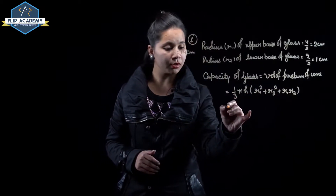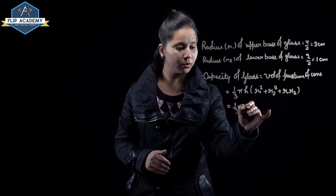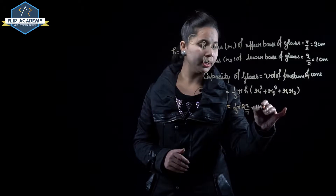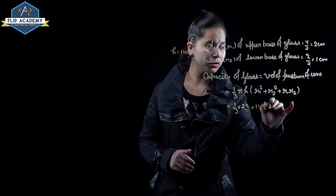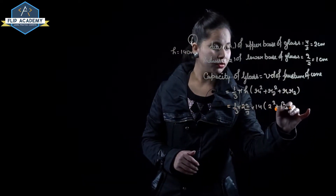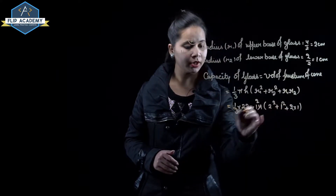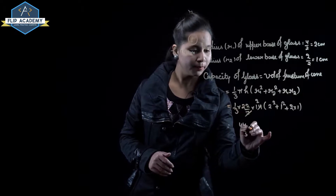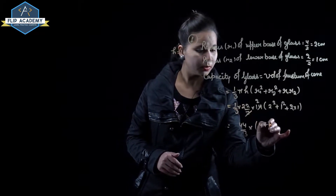Now substitute the values. So 1 upon 3, pi equal to 22 upon 7, height of the glass is 14, r1 square means 2 square, r2 square means 1 square, plus 2 into 1. Now 7 divides into 14, giving 44 upon 3 into 4 plus 1 plus 2.